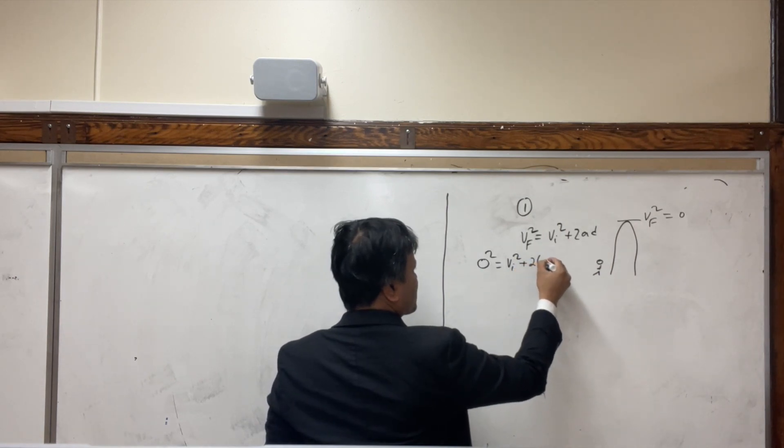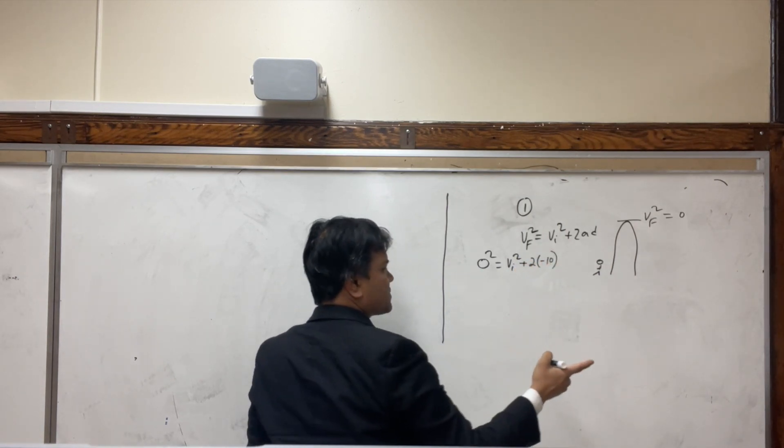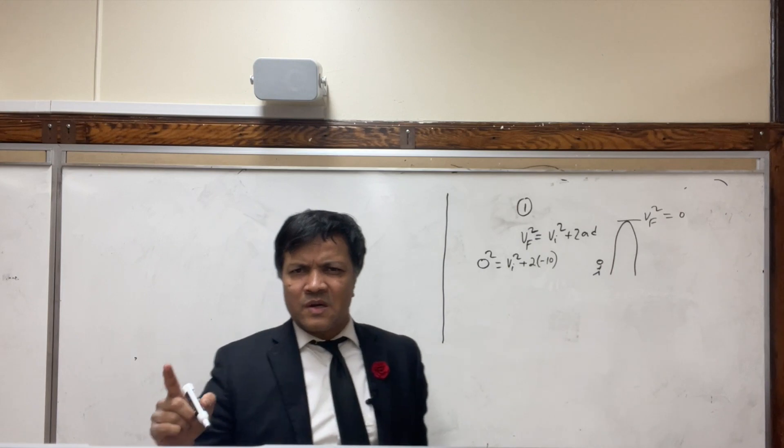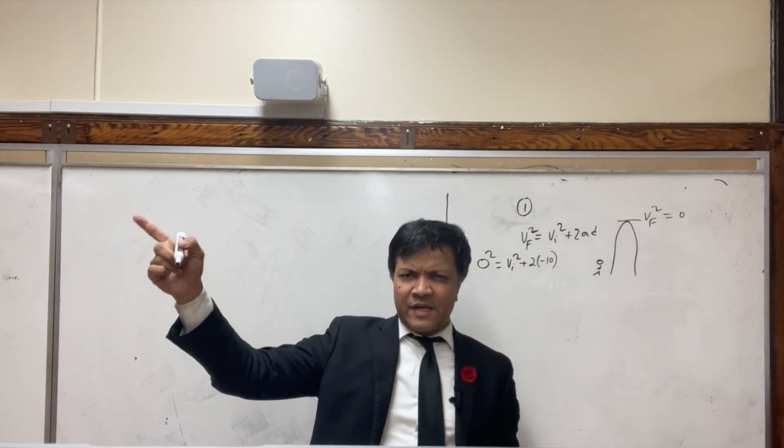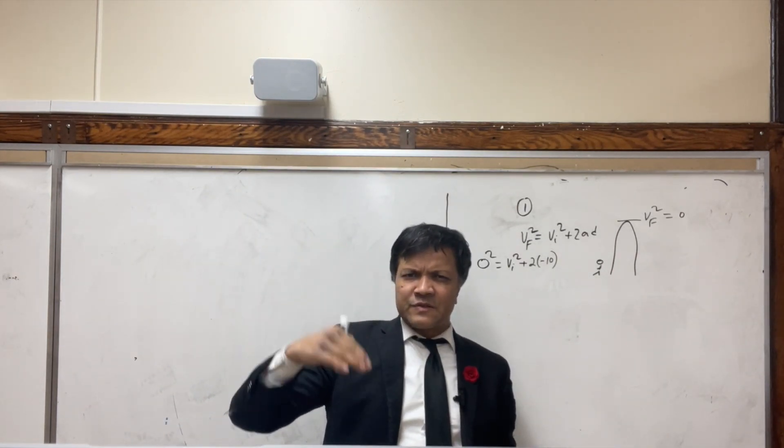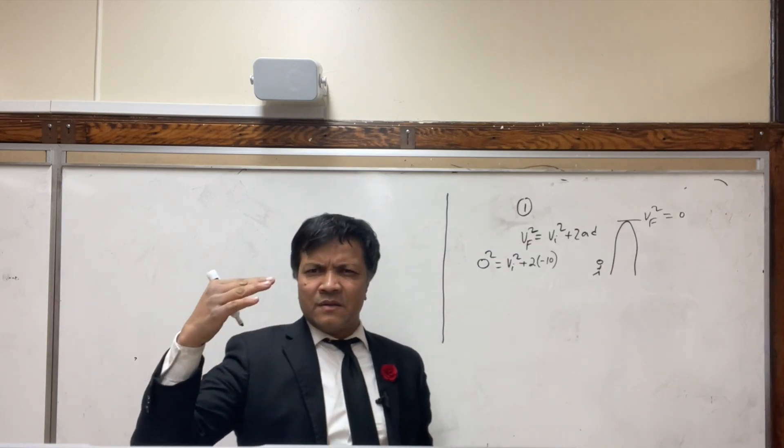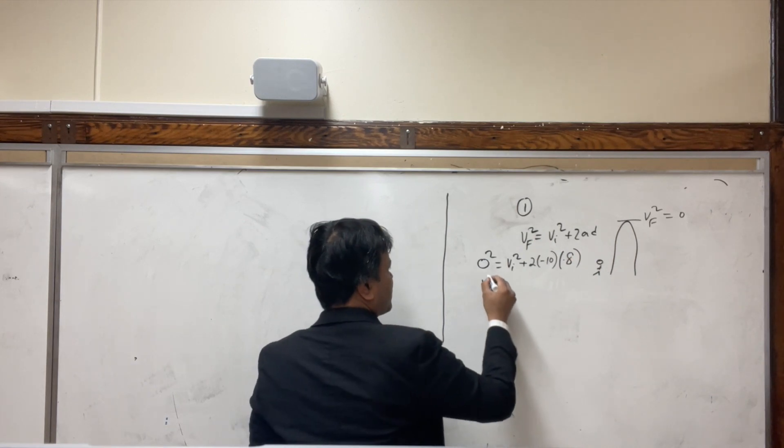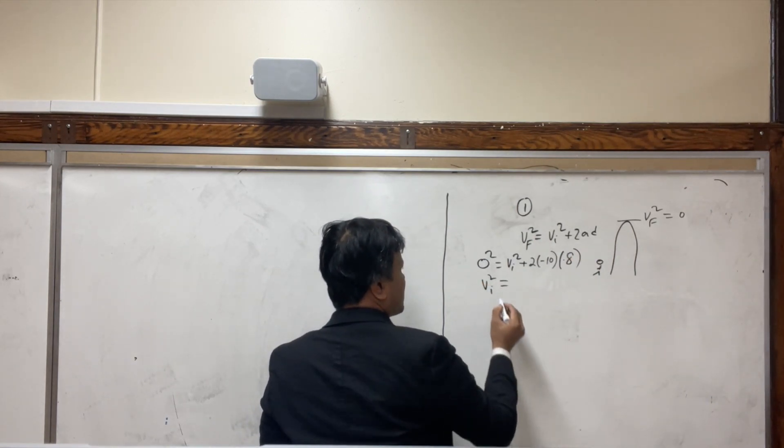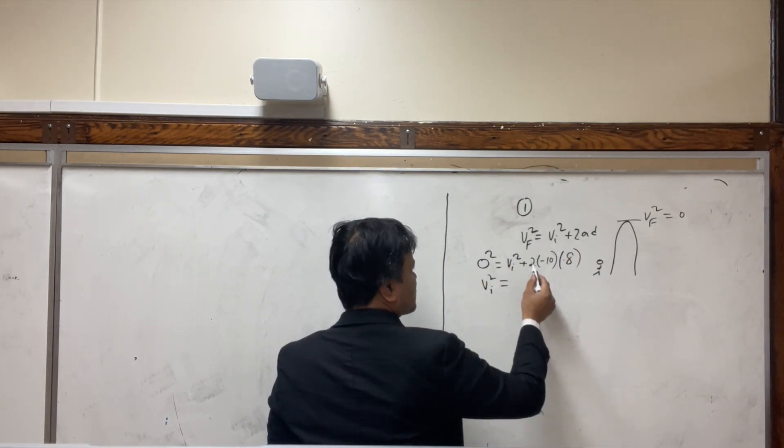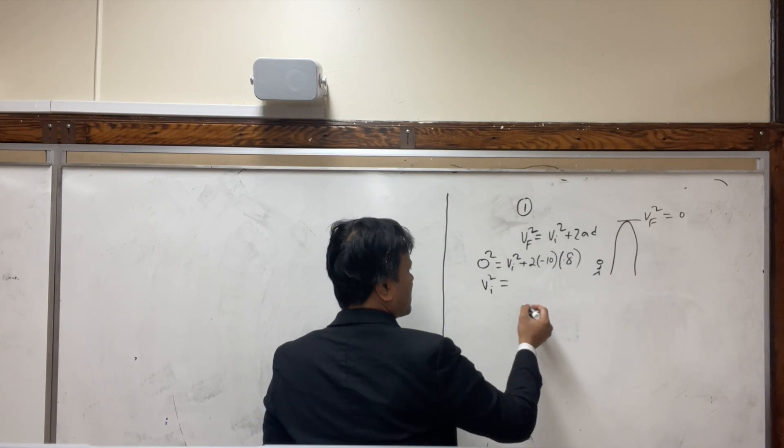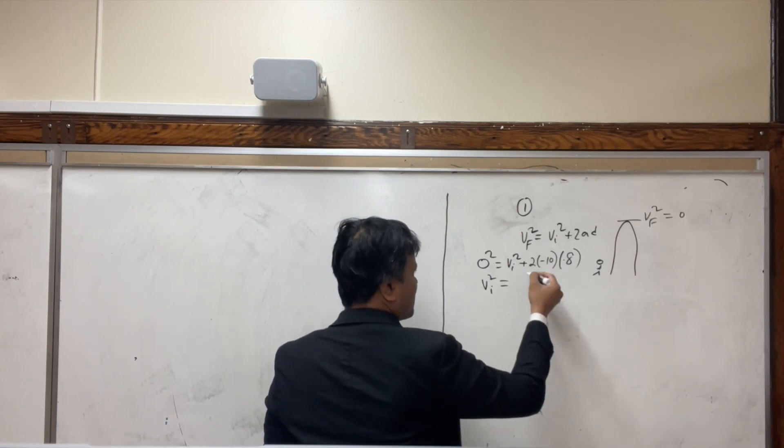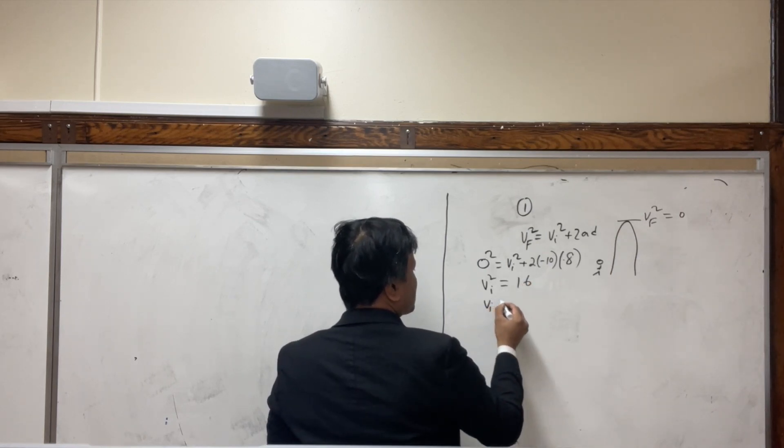0 squared is equal to V_i squared, what we're trying to find, plus 2. We're going to use negative 10, and D as you measure it is 0.8 meters, that's the vertical jump. So V_i squared is 2 times 10 times 0.8, which is 16. So V_initial is 4 meters per second.